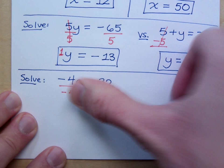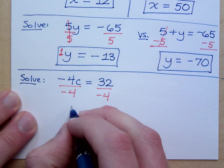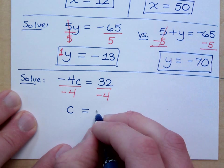So what I'm solving, in this case for c, I want just to play in positive 1c. And then on the right side, 32 divided by negative 4 is negative 8.